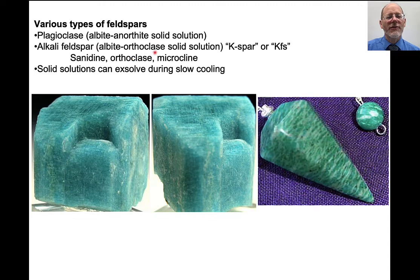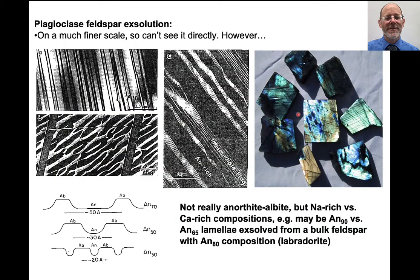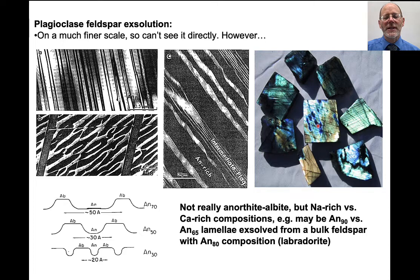Although alkali feldspars can form solid solutions, they can also separate out into two different alkali feldspars if cooled slowly enough. These images are of the mineral amazonite, a lead-bearing potassium feldspar — the blue areas are more potassium-rich and the thin white areas are more sodium-rich. You can see this in plagioclase too — sometimes you need a transmission electron microscope to see it — but this intergrowth of more sodium-rich and more calcium-rich plagioclase can cause diffraction of light and create the schiller effect, the blue and green colors seen in labradorite.